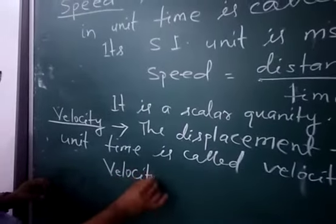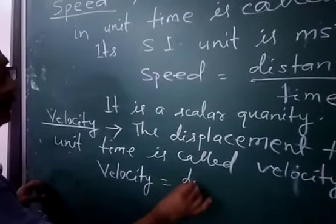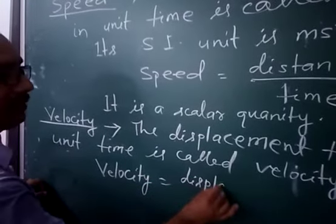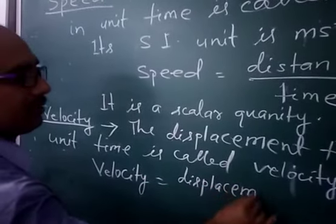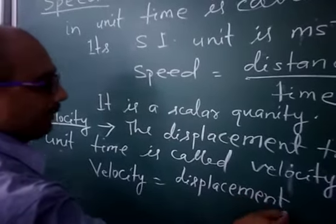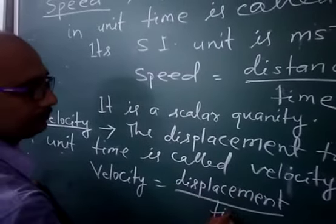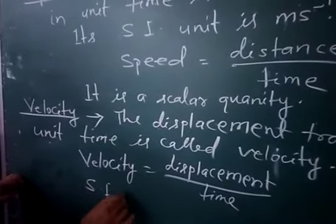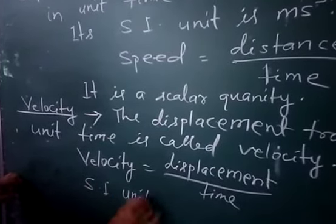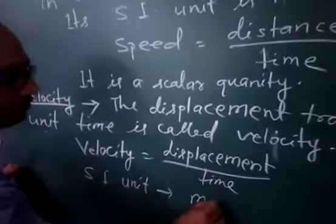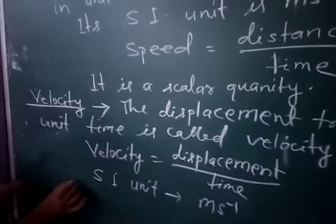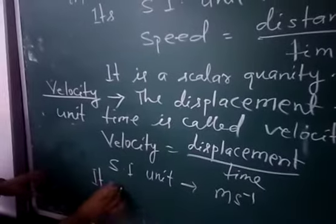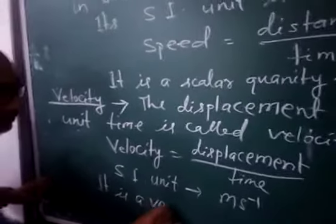Velocity equals displacement by time. Its SI unit also is meter per second. It is a vector quantity.